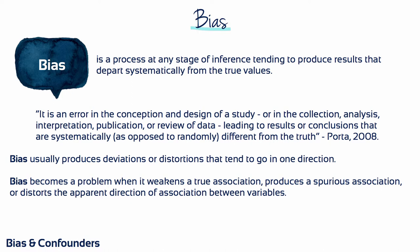Bias usually produces deviations or distortions that tend to go in one direction. It becomes a problem when it weakens a true association, or produces a spurious association, or distorts the apparent direction of association between variables.